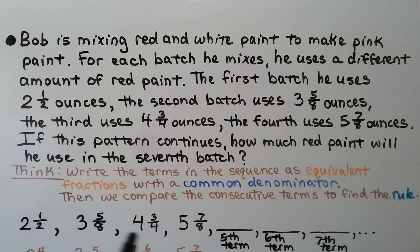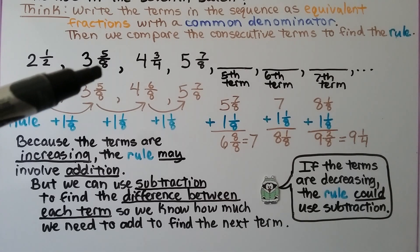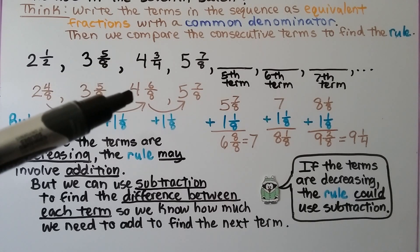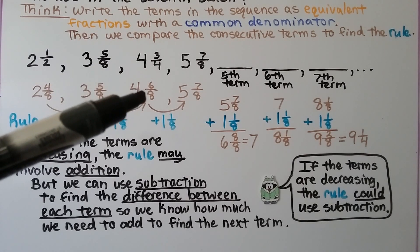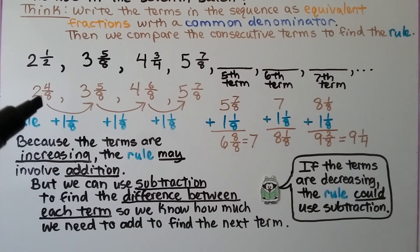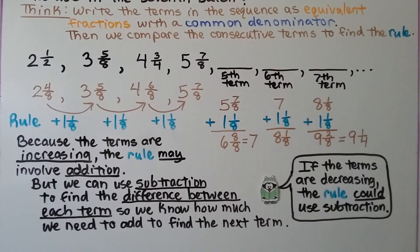The denominators are two, eight, four, and eight. We can use eight for a common denominator for them all. Two and a half becomes two and four eighths; three and five eighths already has eight; four and three fourths becomes four and six eighths; five and seven eighths already has eight. Now that they all have eight as a common denominator, we can find the rule. We see two and four eighths, three and five eighths, four and six eighths, five and seven eighths.